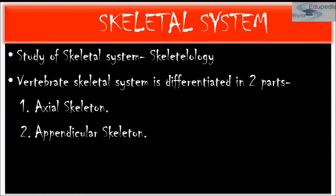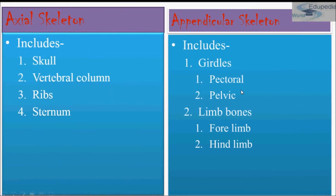The skeletal system of humans is divided into two categories: axial skeleton and appendicular skeleton. The study of the skeletal system is known as osteology. Axial skeleton includes skull, vertebral column, ribs, and sternum. In this section we will study only about the axial skeleton, and in the next section we will study the appendicular skeleton, which includes girdles — pectoral girdle, pelvic girdle — and limb bones: forelimbs and hind limbs.